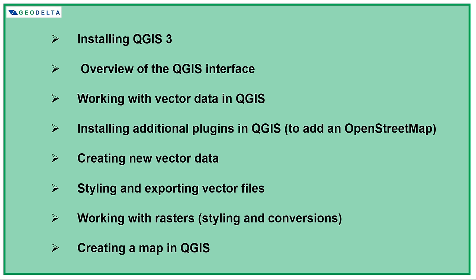These are the major things we will be discussing. First I'll show you how to install QGIS, then give an introduction to the general QGIS interface. Then we'll discuss how to work with vector data such as shapefiles, how to install an additional plugin like OpenStreetMap, and how to work with raster data. Finally, we'll create a map using QGIS which can be of publishable quality. There will be more QGIS videos on this channel, so if you haven't subscribed yet, go ahead and click that subscribe button. Without further ado, let's get started.